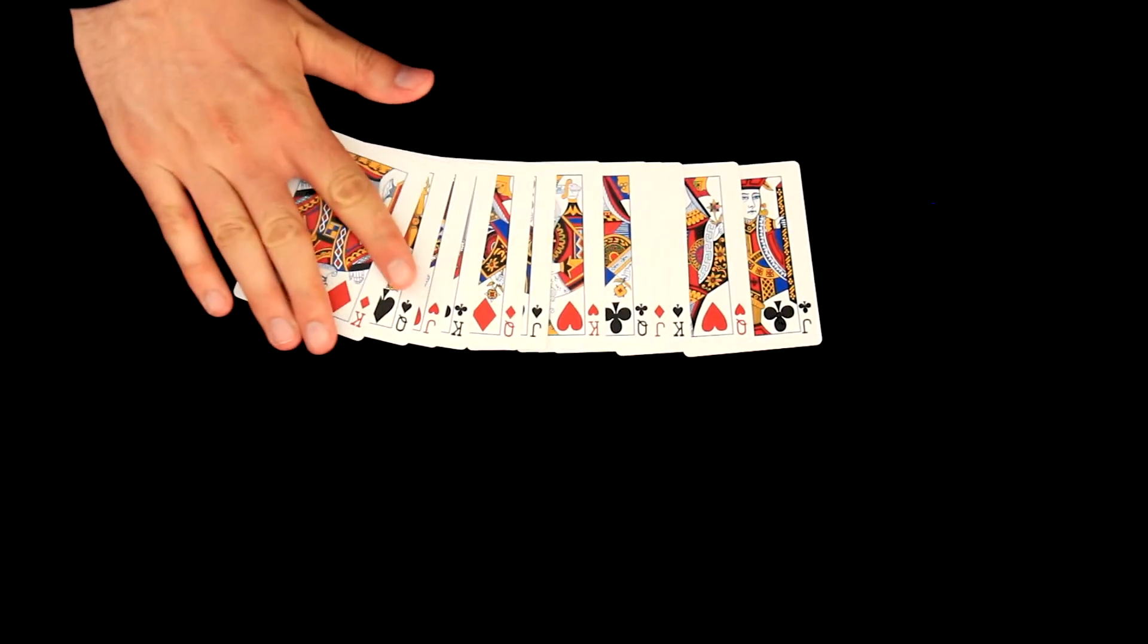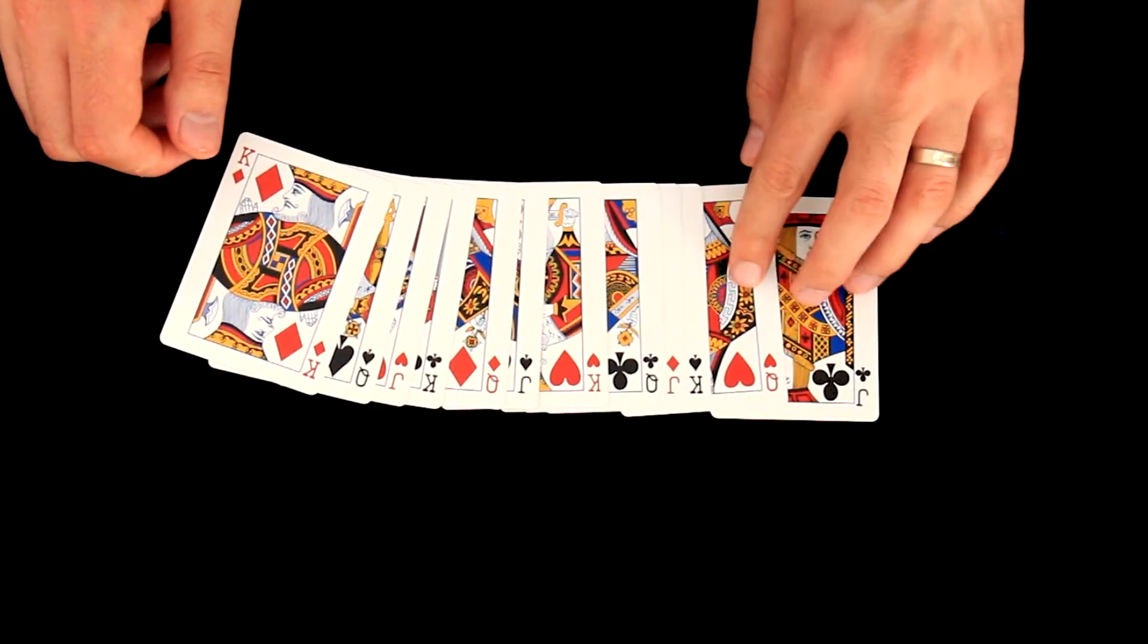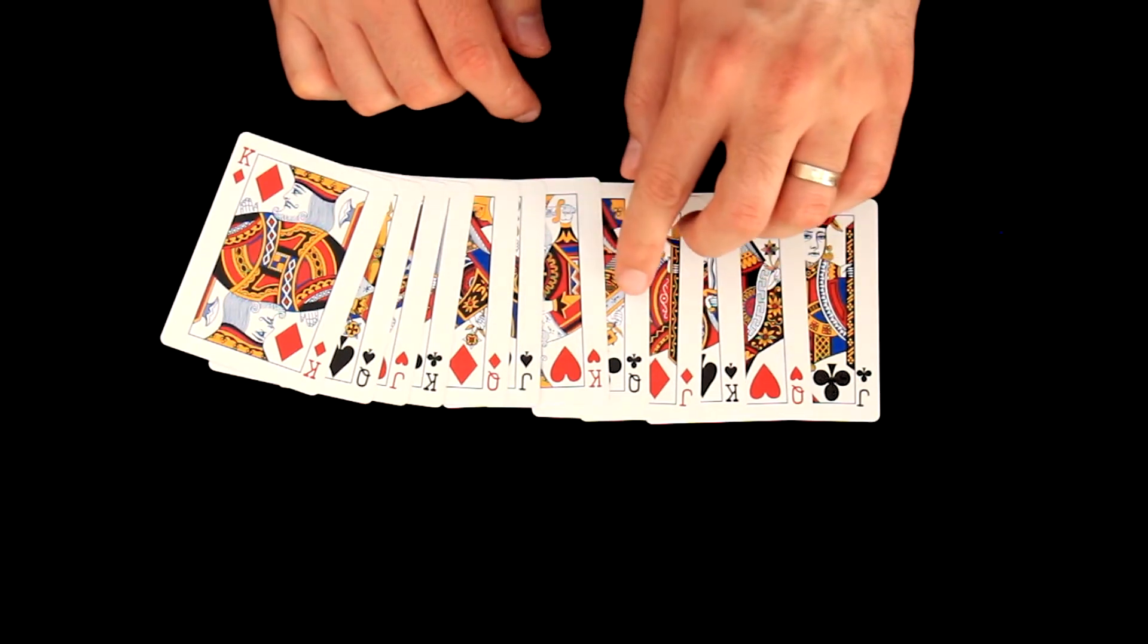We need rotational order of suits and values. So you can use for example this order: jack of clubs, queen of hearts, king of spades, jack of diamonds, queen of clubs.